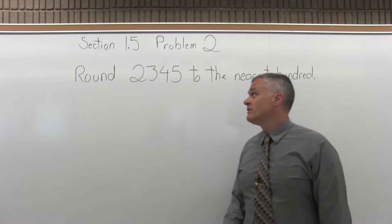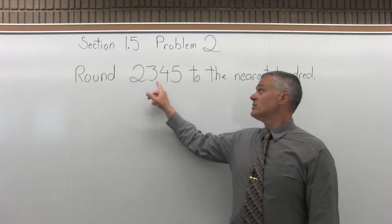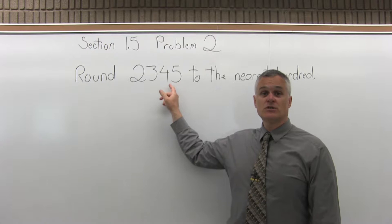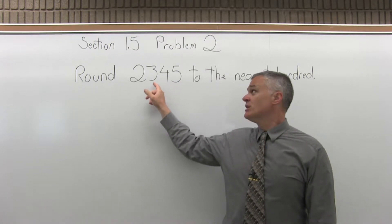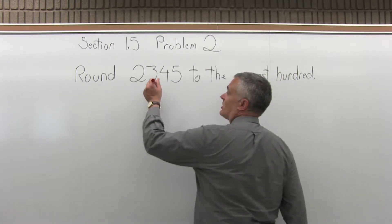First we have to identify which digit is in the hundreds position, and it's the three. The five is in the ones position, the four is in the tens position, the three is in the hundreds position. So this is the digit we want to round.